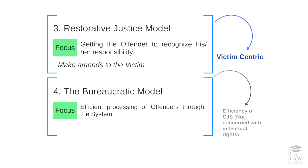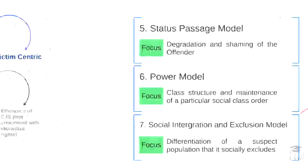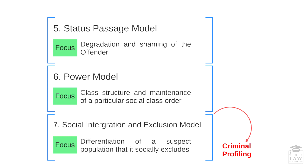Much like the crime control model, where the system is focused heavily on punishing the offender, even within the bureaucratic model there can be miscarriages of justice. The fifth model, the status passage model, places the spotlight on the offender, where punishment comes in the form of degradation and shaming, creating an infrastructure so as to enable others — the victim as well as members of society — to identify this person as an offender, even after he comes out of prison.